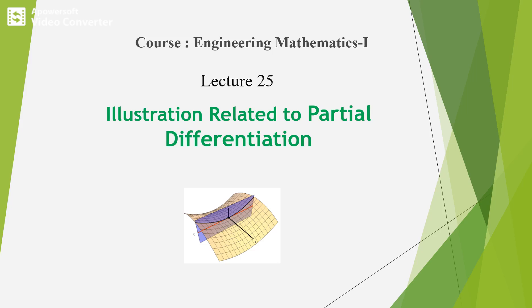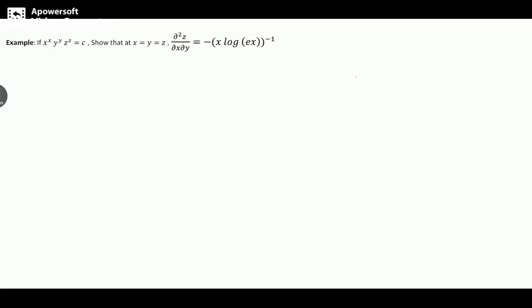Hello everyone, Lecture 25: some illustrations related to partial differentiation. Take an example: if x^x · y^y · z^z = c, then show that if x = y = z, the partial derivative of z with respect to x and y equals minus x·log(e·x) to the power minus one. Here z is the dependent variable and x and y are the independent variables.